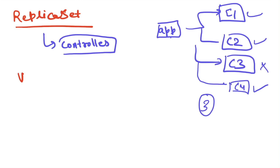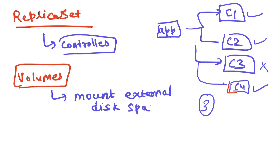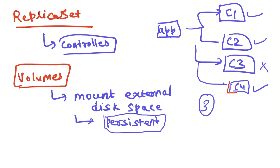The third concept is volumes. Volumes give you external disk space that you can mount within your containers, providing persistent storage. Containers are not persistent by nature — once you stop or delete a container, everything stored inside it is gone. But many applications need persistent storage regardless of whether containers are up or down, and that can be achieved with mountable volumes in Kubernetes.